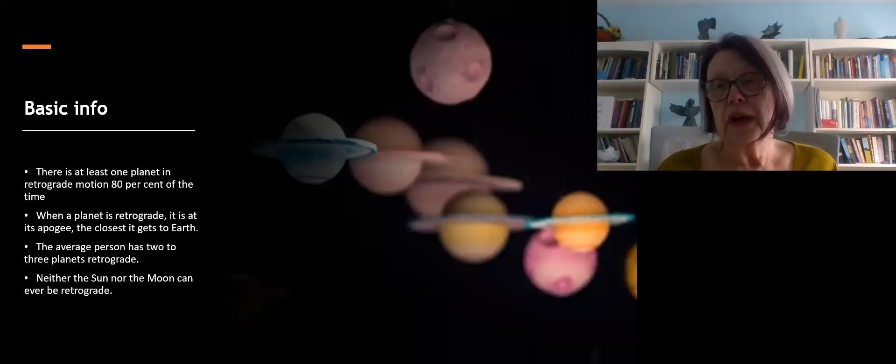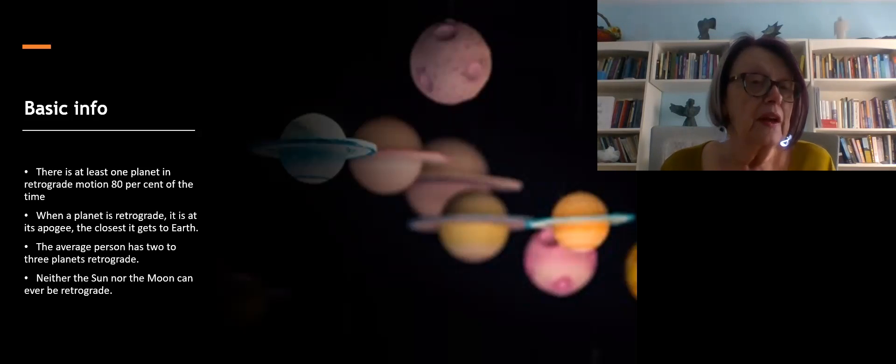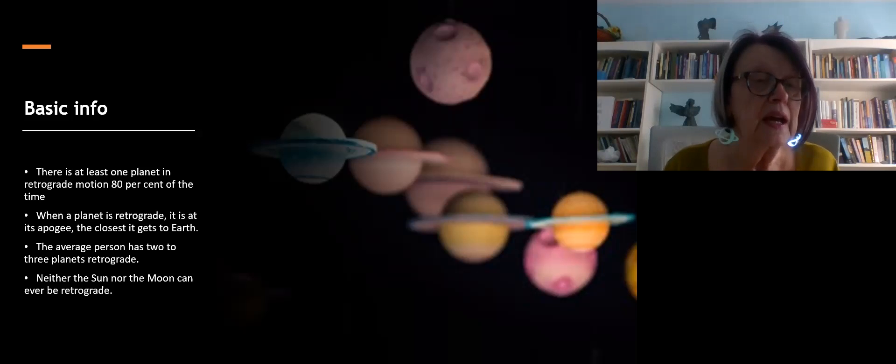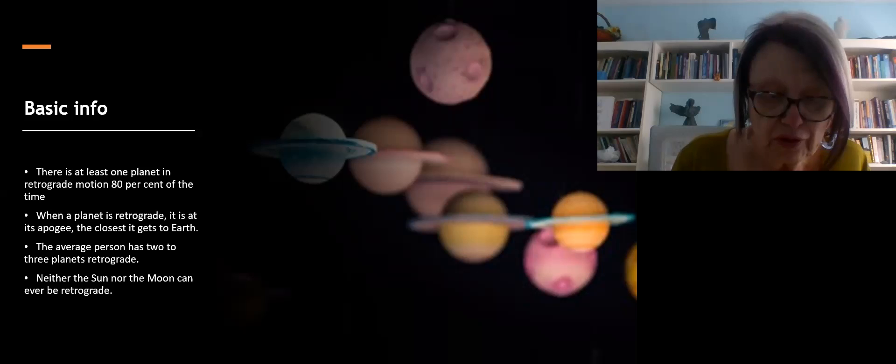Basic info. I always like to start with a foundation so we know where we're going. There's at least one planet in retrograde motion 80% of the time. When a planet is retrograde it is at its apogee, which means it's closest to Earth. The average person has two to three planets retrograde, and obviously neither the Sun nor the Moon can ever be retrograde.